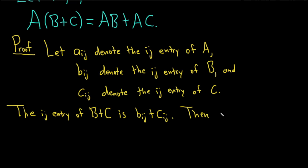Then, now we're going to look at the product. The ij entry of A times (B + C) is the following sum. So the sum runs from, let's use the letter k, runs from 1 to m.